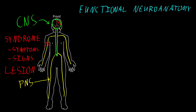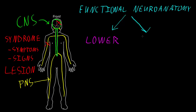But before we start talking about syndromes and abnormalities of the functions of the nervous system, first let's talk about some ways to organize or categorize the functions of the nervous system. The way I like to think about the functions of the nervous system is first to divide them into two big groups — the lower functions and the higher functions of the nervous system.